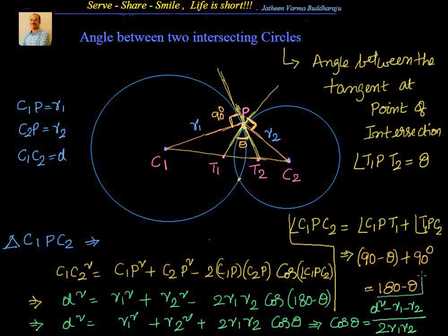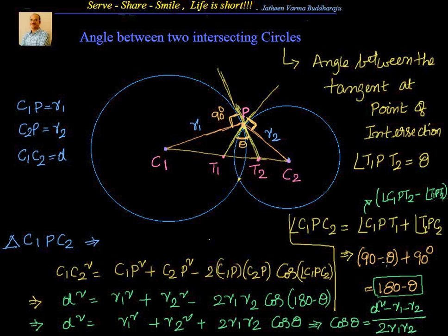Now, the only thing we need to understand is how 180 minus theta was derived. Angle C1PT1 equals angle C1PT2 minus angle T1PT2. Since C1PT2 is 90 degrees and T1PT2 is theta, that gives 90 minus theta. Then 90 minus theta plus 90 — because the angle between the tangent and the line from center to point of contact is always 90 degrees — gives us 180 minus theta. I hope that's clear.